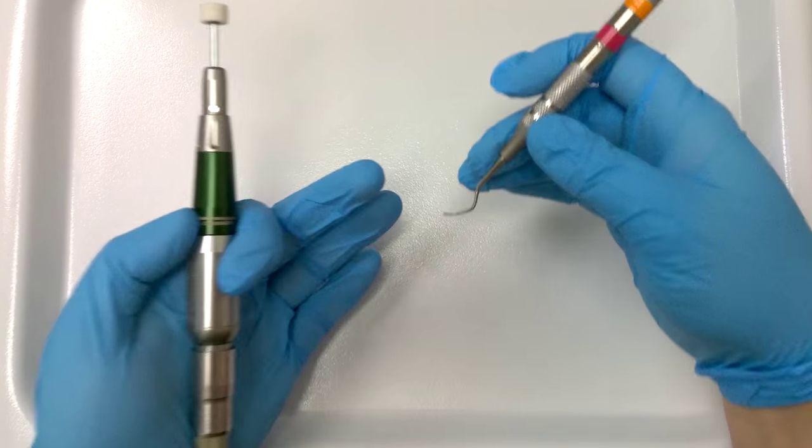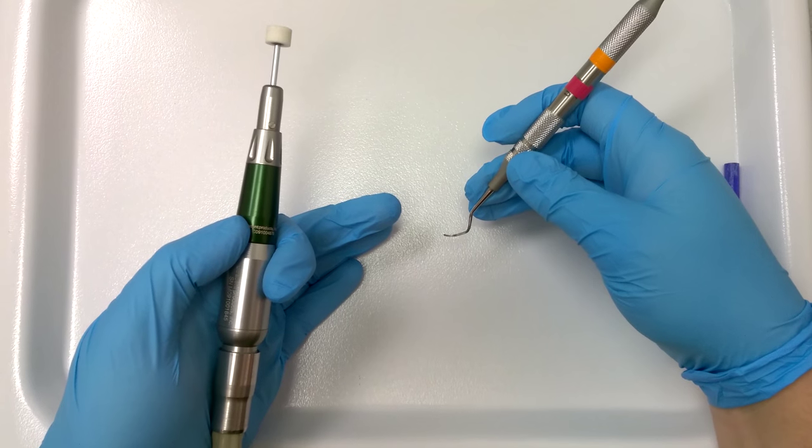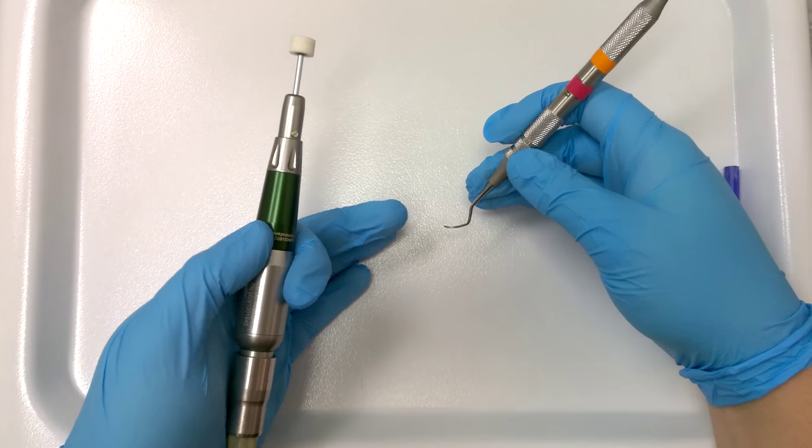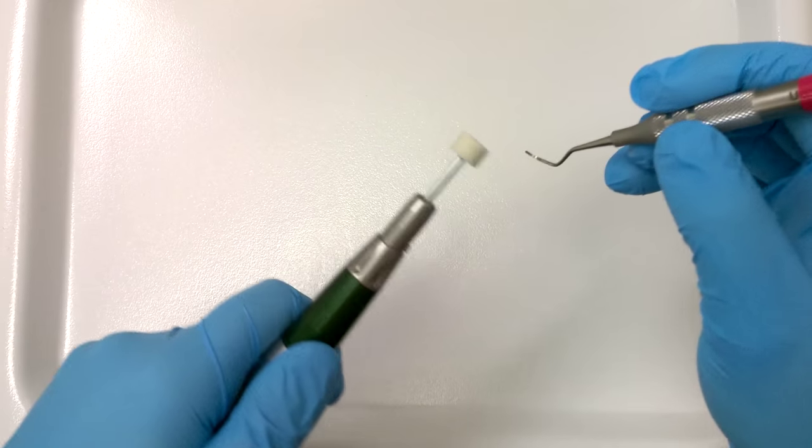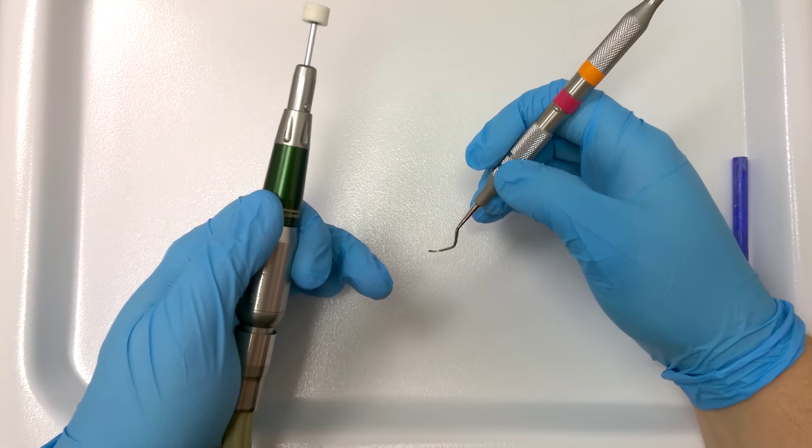What you want to make sure you do is make sure both of your hands have a fulcrum, so you're doing this over your tray or your table or something. We don't want to just be free floating in the air because you tend to slip. So make sure you have two fulcrums.